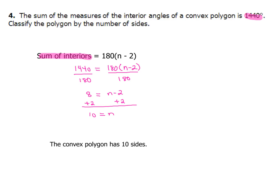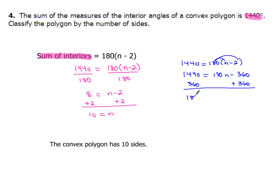I want to show a different way to do it. You could set 1440 equal to 180 times (n minus 2) and distribute the 180 to both terms, getting 180n minus 360. Then adding 360 to both sides gives 1,800 = 180n, and dividing both sides by 180 gives n = 10. Either method works, as long as you do your arithmetic and substitutions correctly.